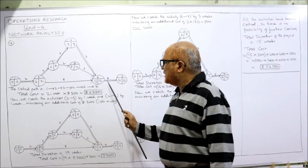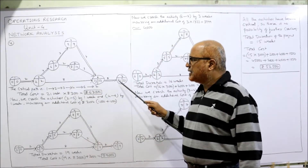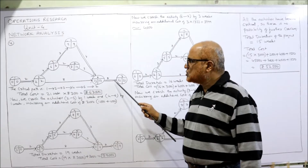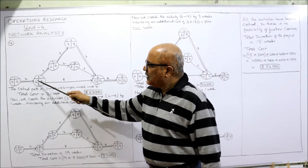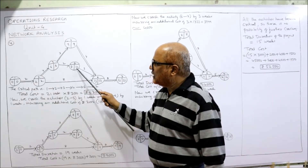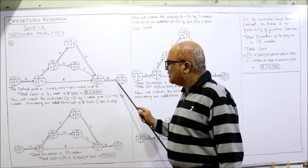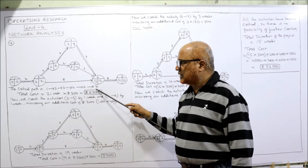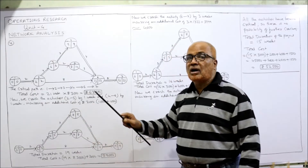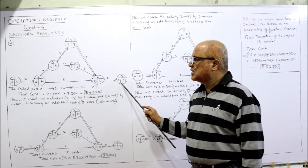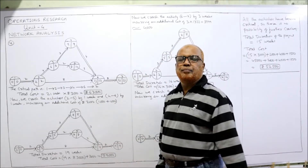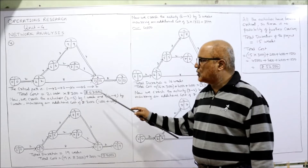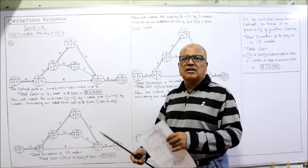Checking the path 1→2→6→7: 2+8=10, 10+8=18 — we need 21, so this is not the critical path. Moving upward: 1→2→3→4→6→7 — values 2, 2, 6, 6, 9, 13, 21 are consistent, so the critical path is 1→2→3→4→6→7. The total project cost without crashing: 21 weeks × 3000 per week = 63,000 rupees.